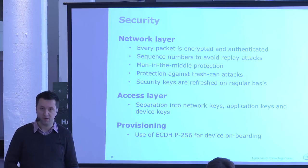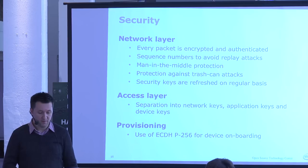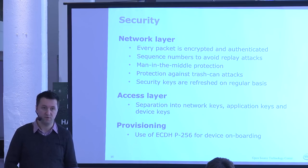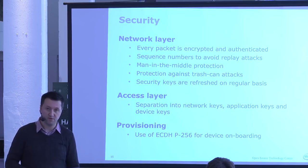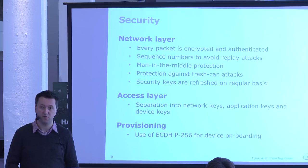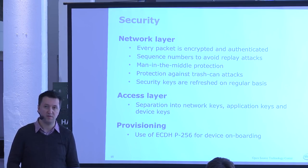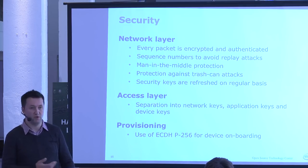The access layer separates network keys, application keys, and device keys. If you have 10 lights and one switch, they all share the same application key since they need to communicate. But device keys are pairwise — the provisioning device has a dedicated key with each device so it can reprogram it without compromising others. Even if an attacker gets an application key, they can only affect that set of lights — not the sprinkler or door lock, which use different application keys.